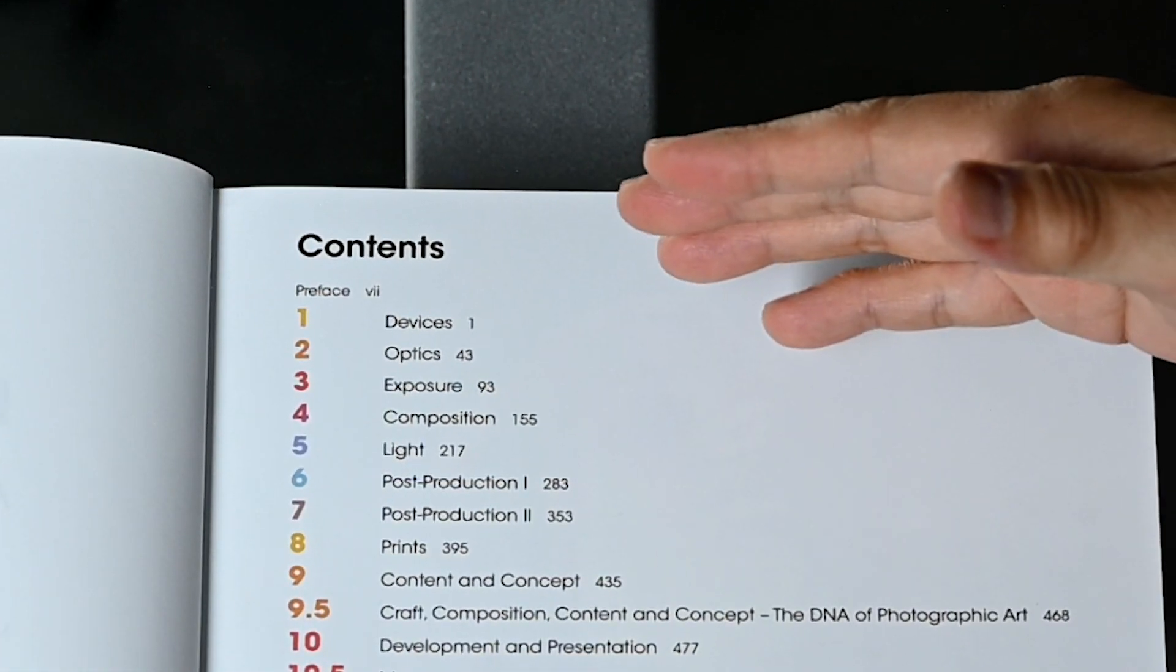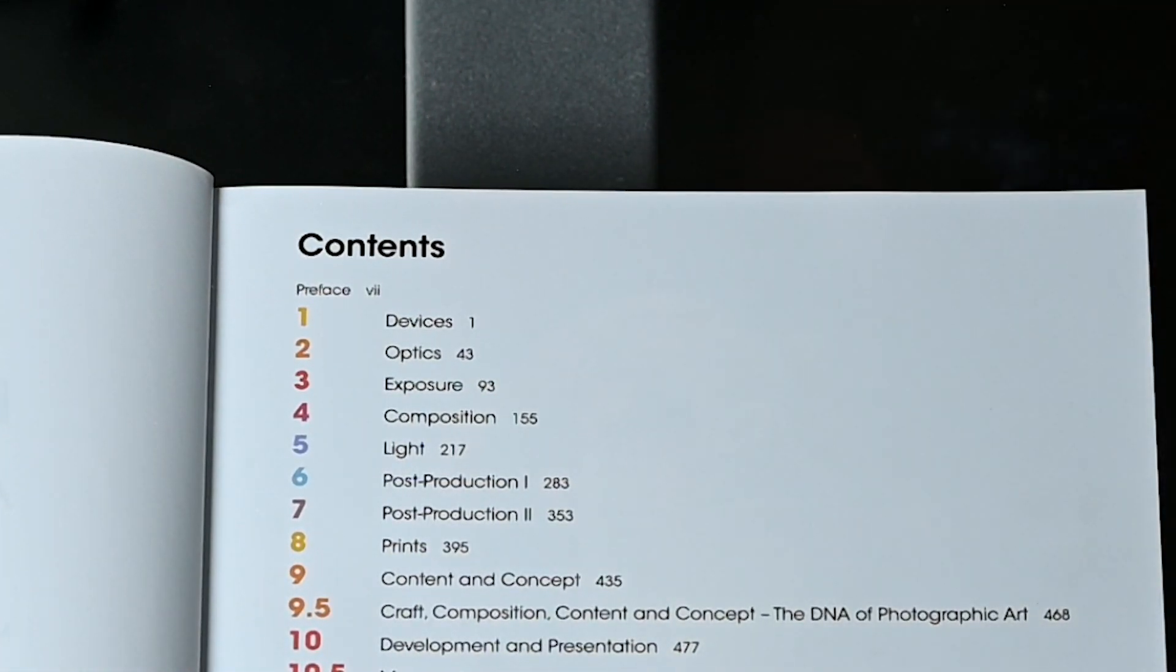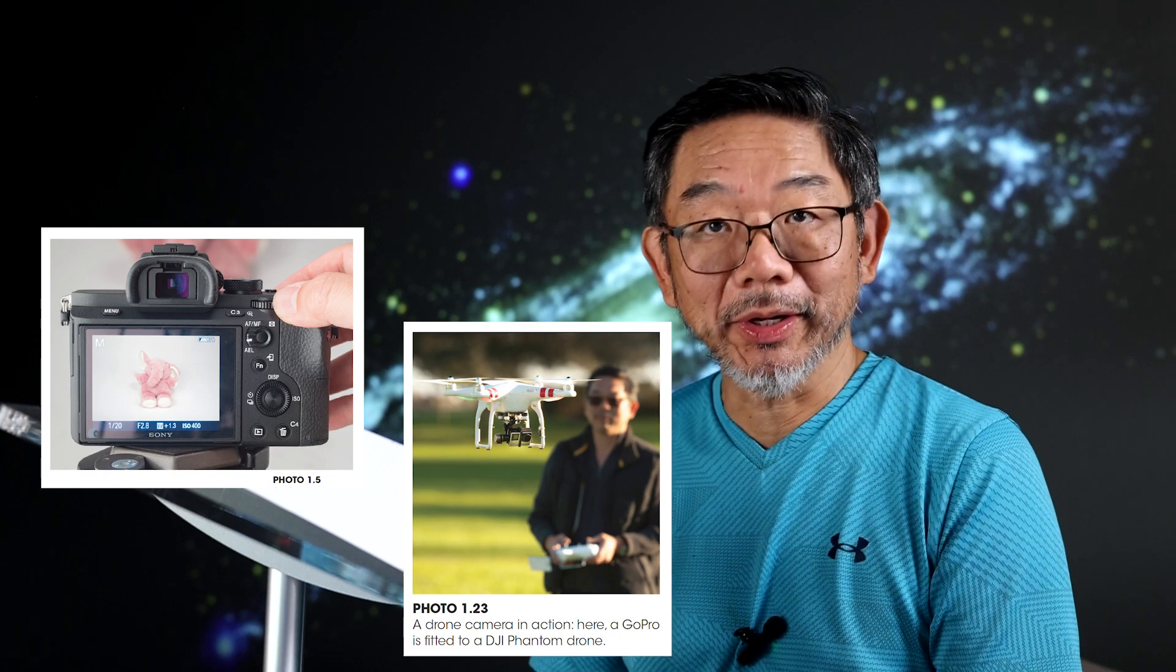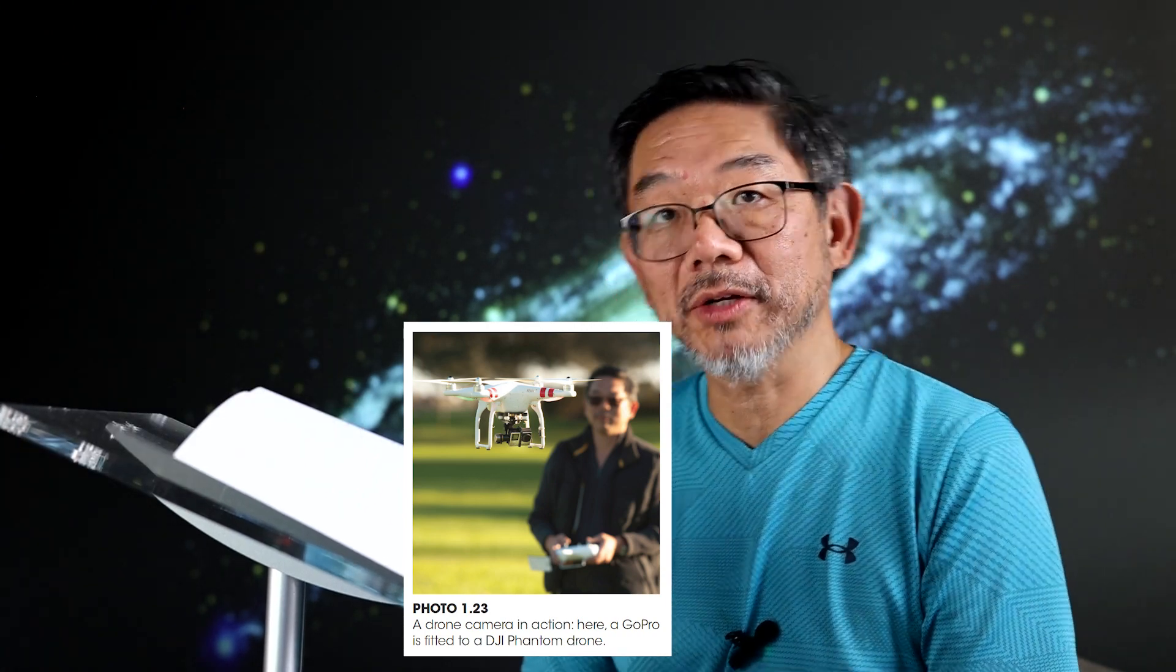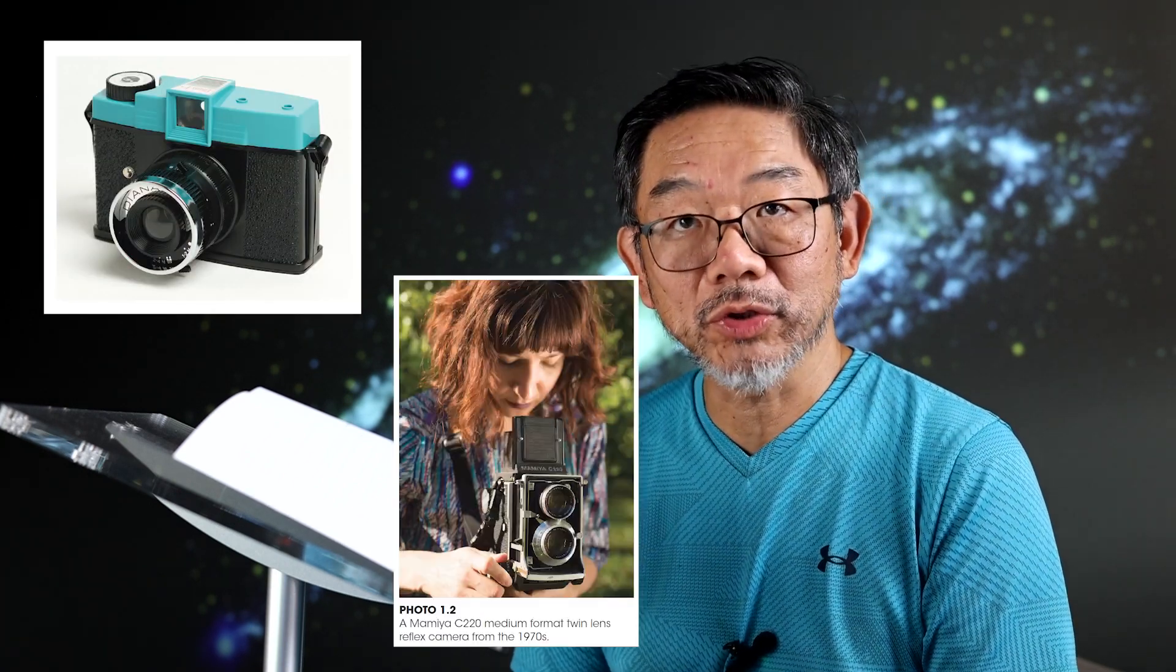Fourteen chapters. Chapter one is Devices. It's an overview of today's options for equipment to capture images, starting from smartphones to mirrorless cameras which are poised to take over from DSLRs to drone cameras. The discussion goes beyond the technical consideration to conceptual and traditional choices.